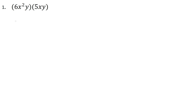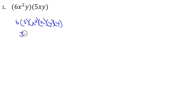Multiplying out, we get 6 times 5, then x² times x, and y times y. So 6 times 5 gives me 30, x² times x gives me x³, and y times y gives me y². One thing to remember is that when you're multiplying variables together such as x² and x, you increase the exponent — you don't change the coefficient out front. The coefficient was determined by the 6 and the 5.